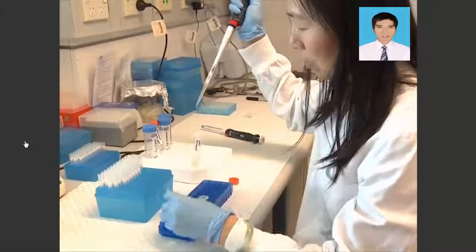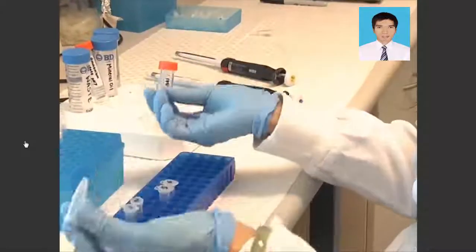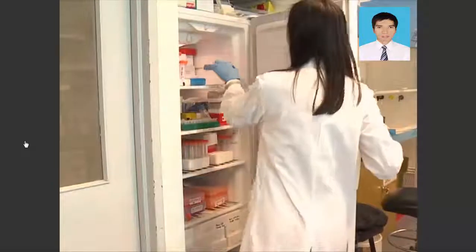Next, ethanol precipitate the DNA. Add ice cold 100% ethanol, 330 µL, and mix well by inversion. Leave at minus 20 degrees Celsius for 1 hour to overnight.